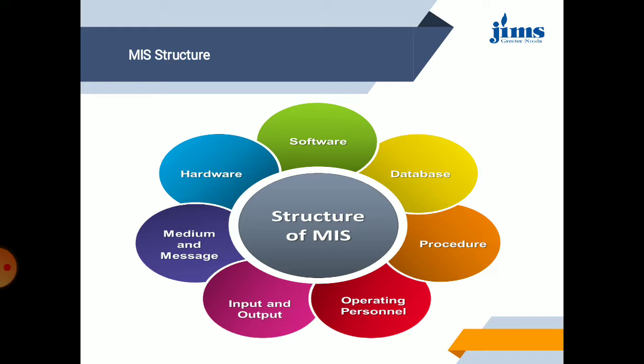The MIS structure is made up of: software, database, processors, operating personnel, input and output, and medium and messages. All these things come together to form a system known as MIS. With the help of all these components, we are able to make decisions for any type of questions or problems.